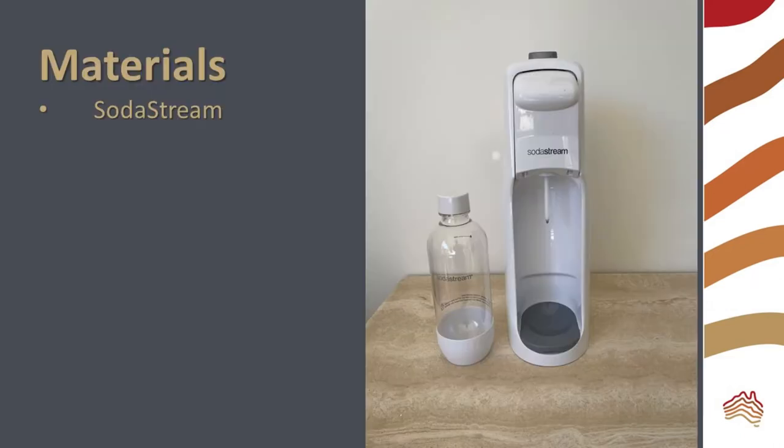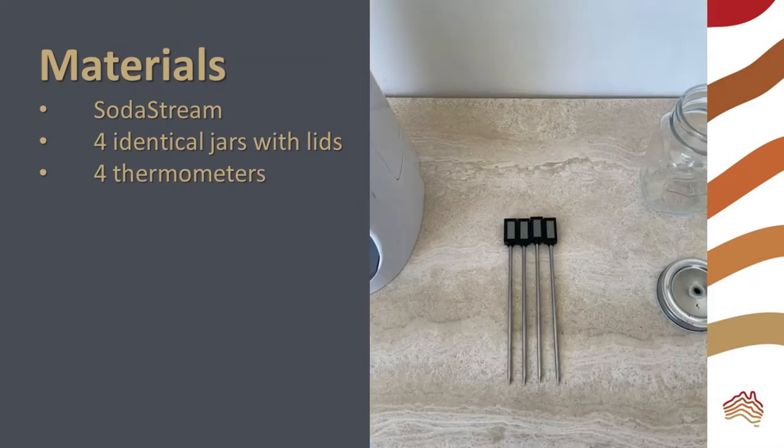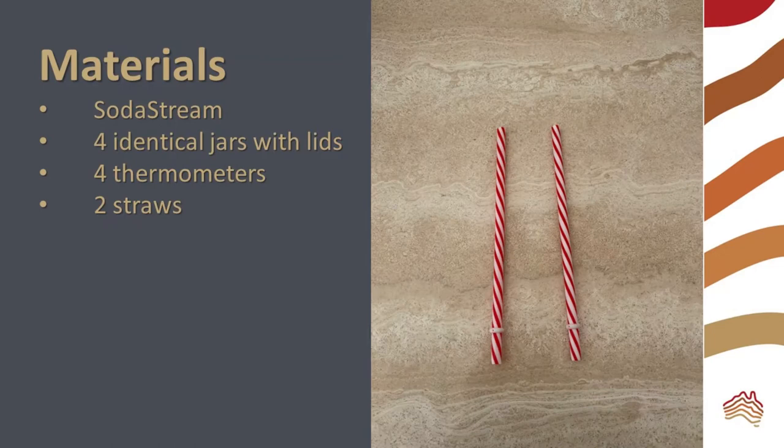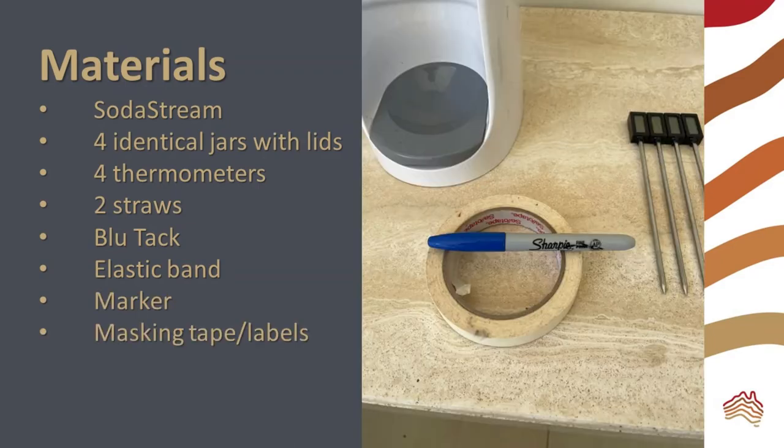For this experiment, the materials you need are a SodaStream machine, four identical jars with lids and holes in them—you can use pasta jars and drill holes into the lids, make sure they're identical though—four thermometers, two straws or bamboo skewers, blue tack, an elastic band, and a marker with masking tape or labels.